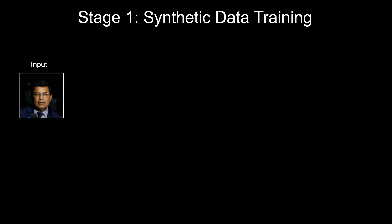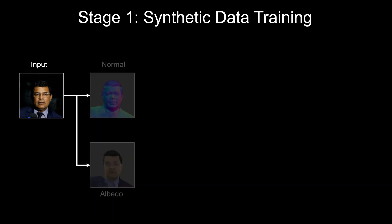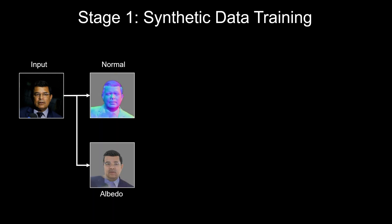Our entire training pipeline can be divided into three stages. In the first stage, we train on our synthetic dataset. The network first estimates normal and albedo maps. Different from prior work, we estimate two kinds of normals: one with lenses and one without lenses.